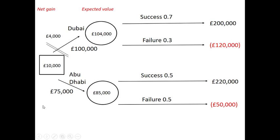In this case we looked at the context of a restaurant — it was based on a real restaurant that we'd been studying, but I did make up these figures. We calculated that the expected value of opening in Dubai was £104,000. It would cost £100,000 to set up there, giving us an expected gain of £4,000, whereas Abu Dhabi's expected value is £85,000 versus a cost of £75,000.